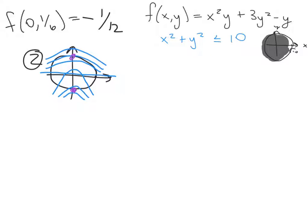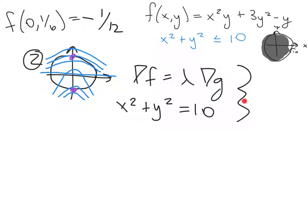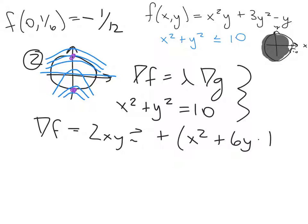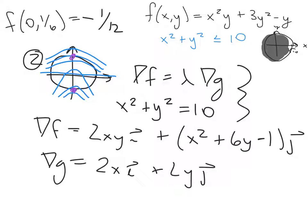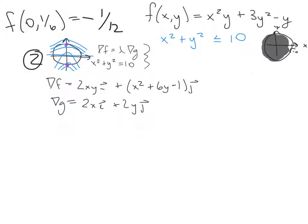Mathematically, we look for places where a perpendicular off the constraint curve is parallel to the direction of maximum increase of the function — equivalent to where the directional derivative is zero. We'll end up with a system of three equations: two from the parallel condition and one from the constraint. The gradient of f is 2xy·i + (x² + 6y − 1)·j and the gradient of g is 2x·i + 2y·j.